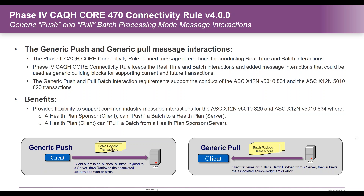There is support for a generic push and pull for batch mode processing. Because of the unique nature of the 834 enrollment transaction and the 820 premium payment transaction, particularly in the Medicaid world where an MCO may need patient rosters via the 834, they can either use the generic push to that entity or the MCO might pull it from the client. We ensure that the rule has very specific requirements on what that transaction looks like, to ensure a uniform implementation across the industry for these two transactions, simplifying how entities and trading partners conduct them.